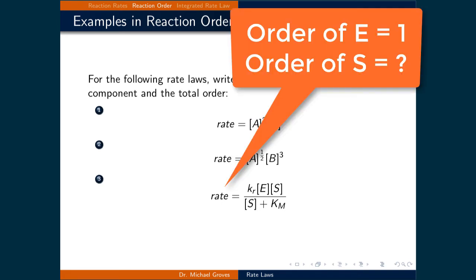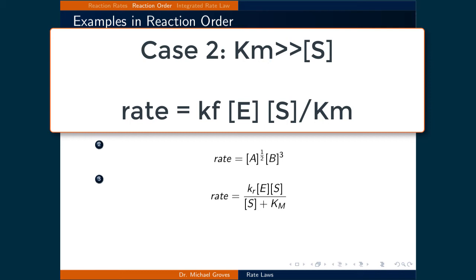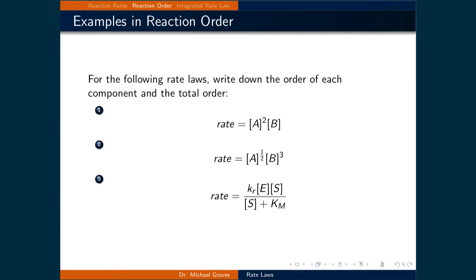Example 3 is more complicated. Component E has an order of 1; however, component S has an undefined order, and the total order is also undefined. However, if [S] is much larger than K_m, then the denominator simply becomes [S], which cancels out the factor of S in the numerator, and the total order becomes effectively 1. Conversely, if S is much smaller than K_m, then the denominator will simply be K_m, the order of S is effectively 1, and the total order is effectively 2. This shows that the order need not be a static value, and the importance of each reagent may change as concentration changes.